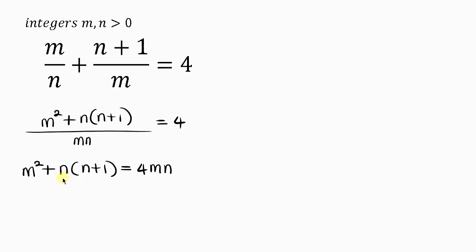Our next step will be to open up this bracket. So we have m² + n times n, that's n² plus n times 1, that's n. This is equal to 4mn.